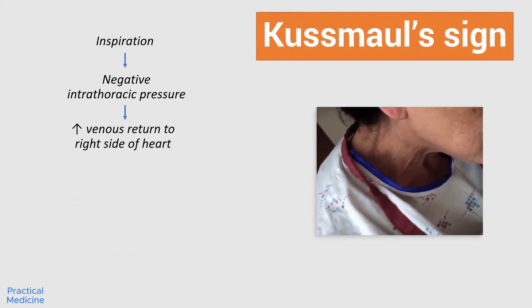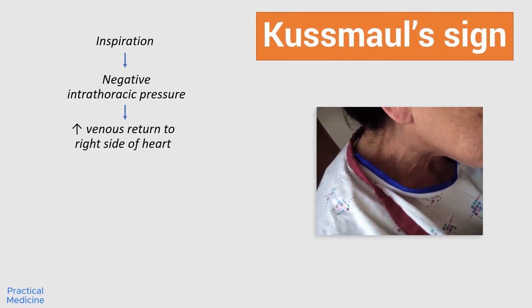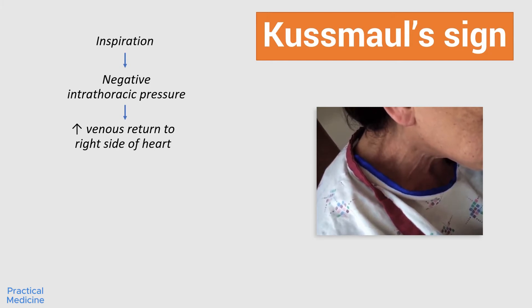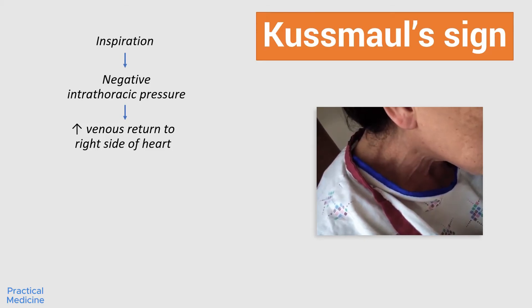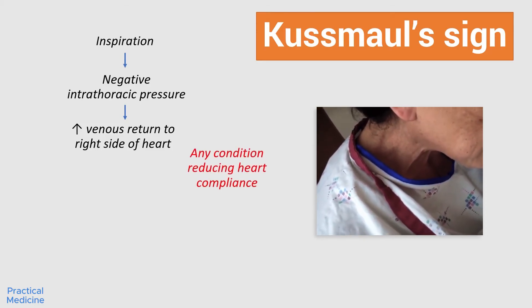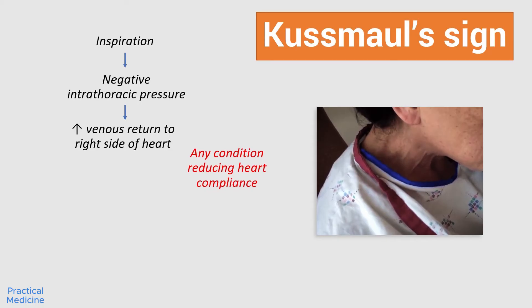In contrast, Kussmaul's sign is said to be present when there is a paradoxical rise in JVP, or there is a failure in the appropriate fall of JVP with inspiration. This occurs in conditions which interfere with right ventricular filling.